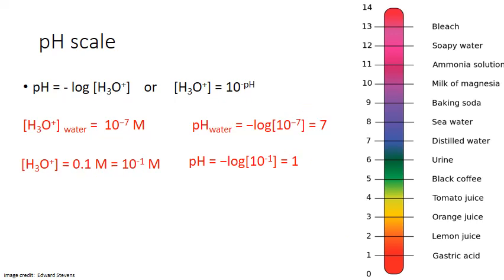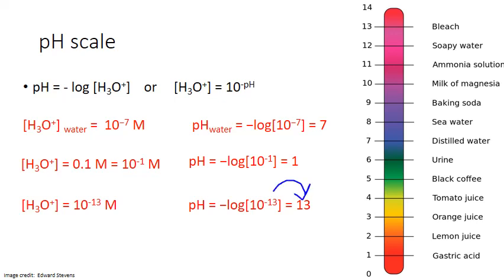In a basic substance, the hydronium ion concentration is actually very small. For example, 10 to the negative 13 — that's 12 zeros between the decimal and the 1. Taking the negative log of that returns the positive value of the exponent, which is 13. This is associated with a very basic solution like bleach.